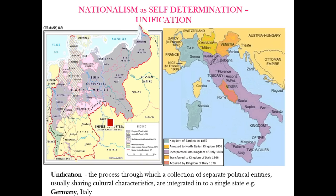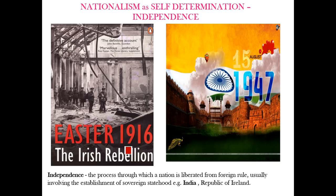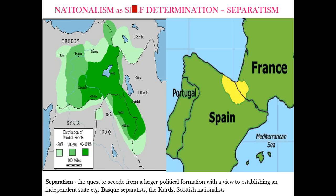There are several ways in which nations can achieve self-determination. First is unification — the process by which separate entities sharing the same cultural characteristics are integrated into a single state; for example, Germany emerging through unification under Bismarck, and Italy unified under Mazzini. Second is independence — the process through which a nation is liberated from foreign rule, usually establishing sovereign statehood; examples include India in 1947 and the Republic of Ireland in 1922 following the Easter Rising of 1916. Third is separatism — the quest to secede from a larger political formation to establish an independent state; examples include the Basque separatists in northern Spain, the Kurdish nation which overlaps with several other nations, and Scotland and its recent referendum.